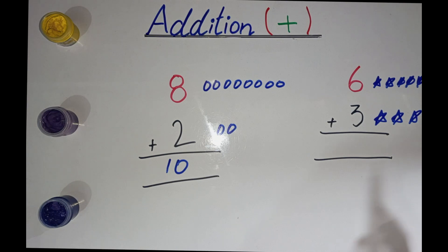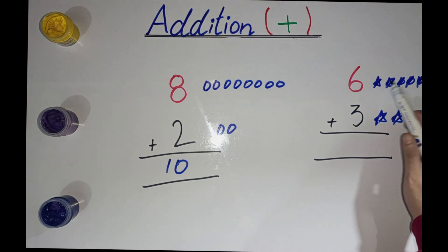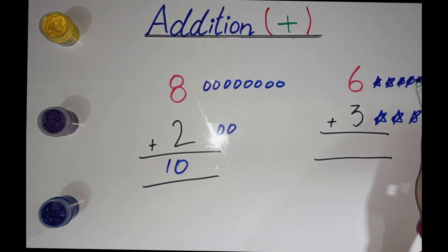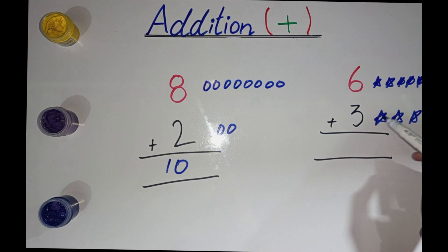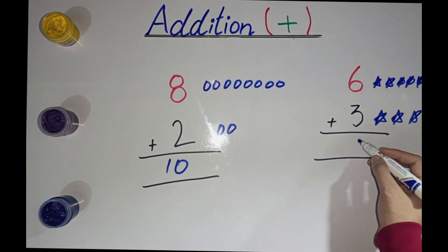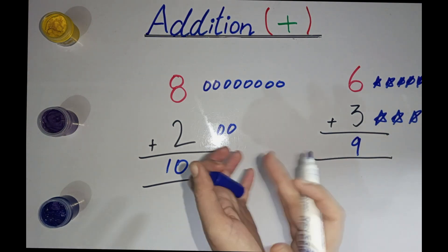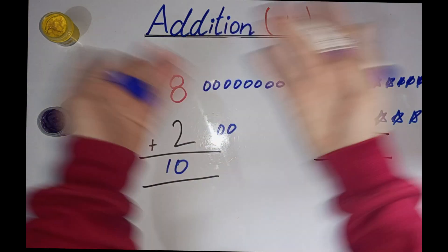Count all these stars: 1, 2, 3, 4, 5, 6, 7, 8, 9. Write 9 here. Very good. Yay!